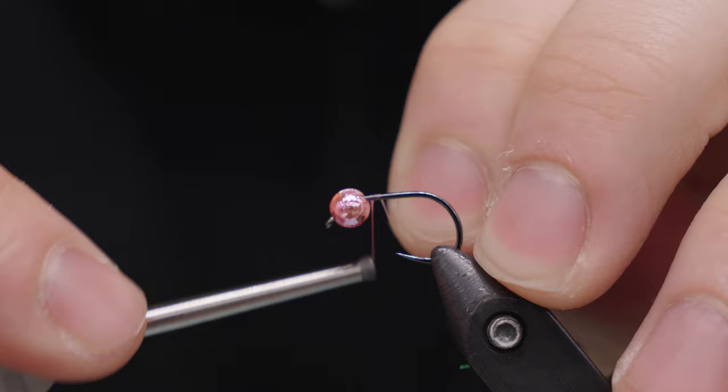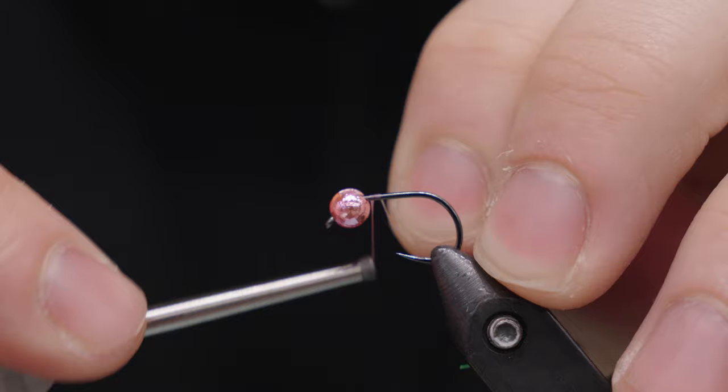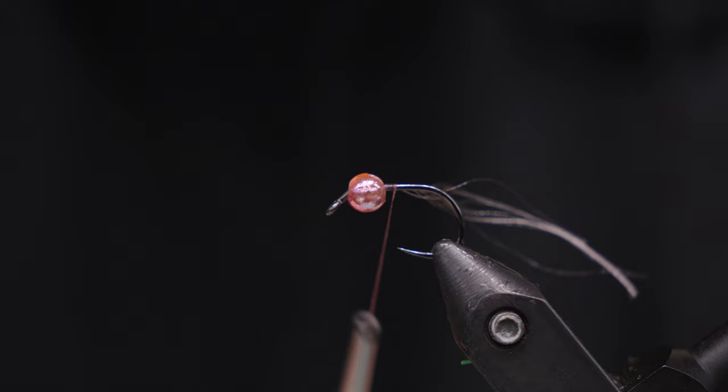This thread I'm using here is Semperfli Nanosilk 50 Denier in pink. Makes a great color for eggs. And you don't need a lot for this egg. Less is more for this for sure.